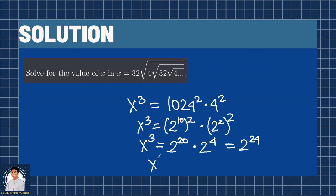And now, since x cubed equals 2 raised to 24, we can just cube root both sides, giving us x equals 2 raised to 8, which is 256.